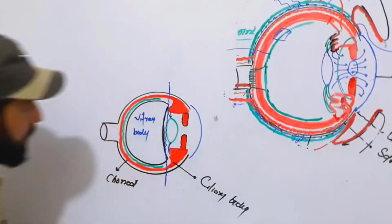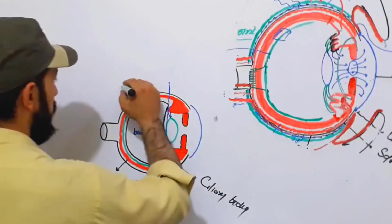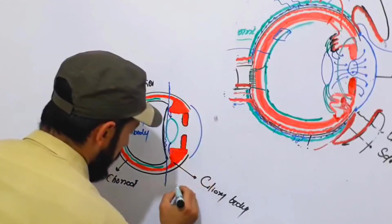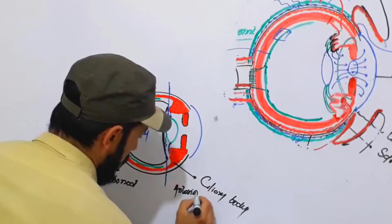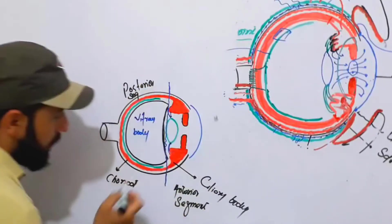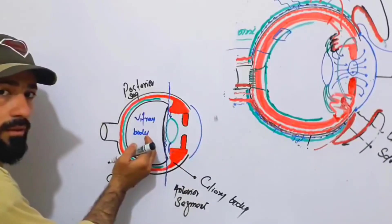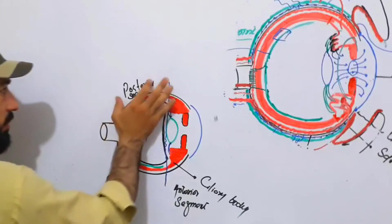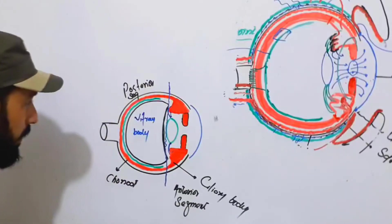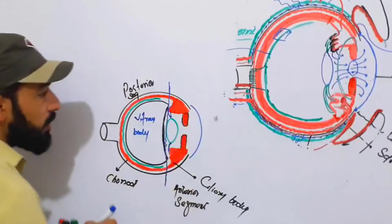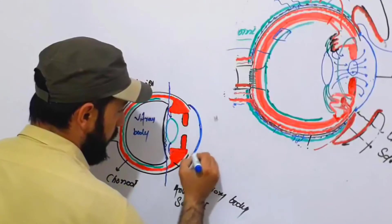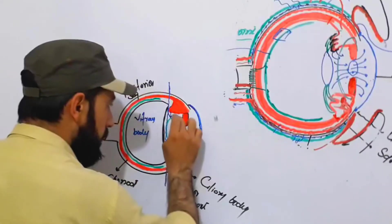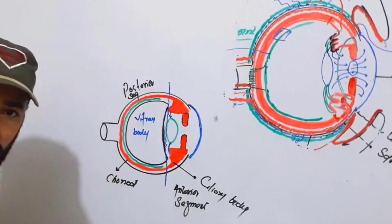A line drawn at the front of the vitreous body divides the eye into the posterior segment and the anterior segment. The anterior segment is everything anterior to the vitreous body. The posterior segment contains all structures posterior to the lens, including the vitreous body. The anterior segment contains the cornea, ciliary body, lens, suspensory ligaments, iris, anterior chamber, and posterior chamber.